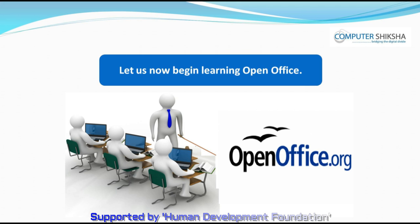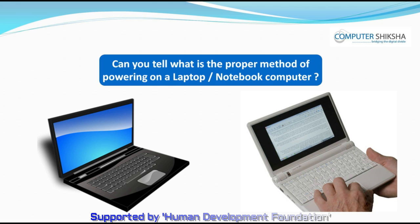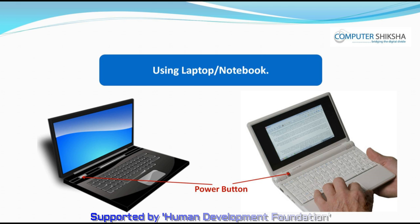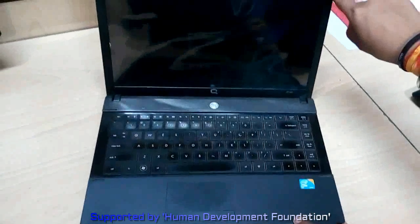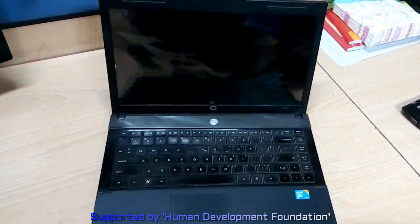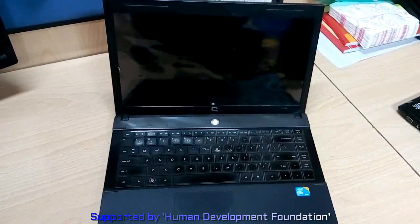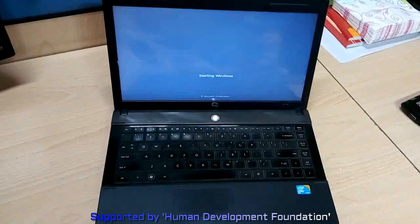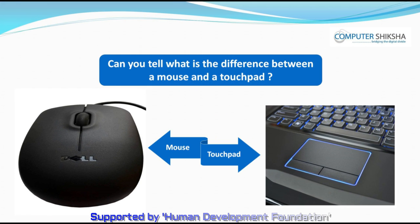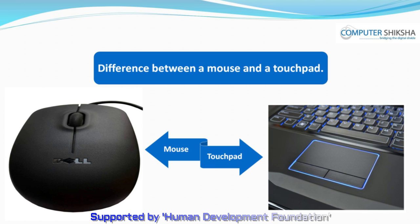Let us now begin learning OpenOffice. Go ahead and power on your computers. Can you tell what is the proper method of powering on a laptop or a notebook computer? If you are using a laptop or a notebook computer, then with your left hand hold down the lower portion, and with your right hand pull up the top portion as is being shown in the video. To power it on, look for the power button and press it once. Your laptop will start powering up. We use the mouse with desktop computers and the touchpad with laptop or notebook computers.